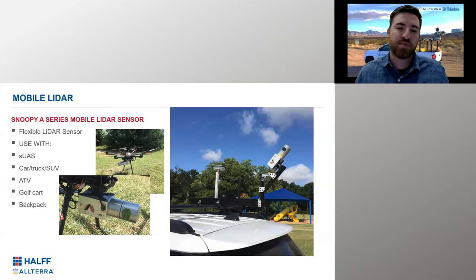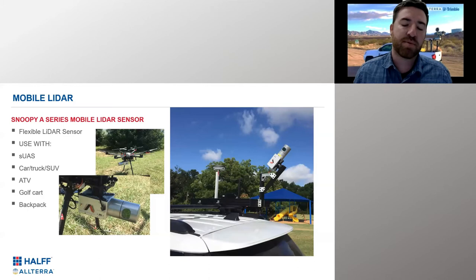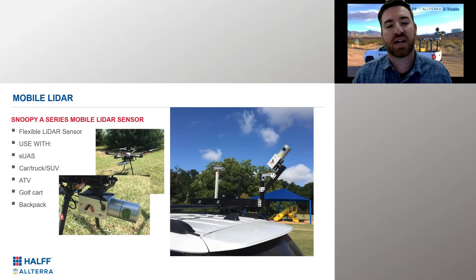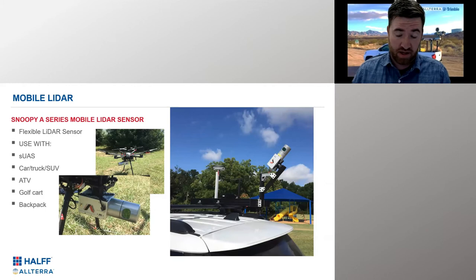Before I move on — this is the other sensor I mentioned. We typically use it on a drone, but we have a good setup where we can put it on the back of a vehicle, a golf cart, ATV, or backpack. It's a good Swiss Army knife sensor, but it's a smaller sensor — the IMU is not quite as good as what the MX9 is providing, so the datasets aren't quite as pristine.